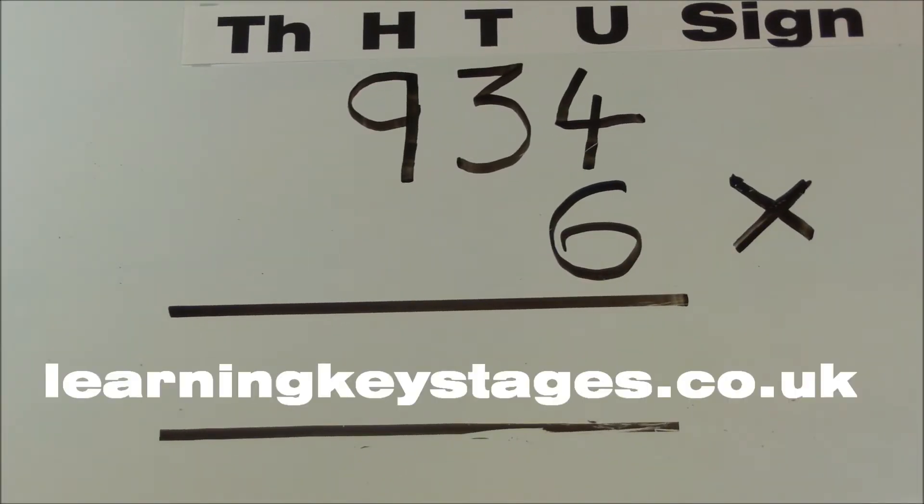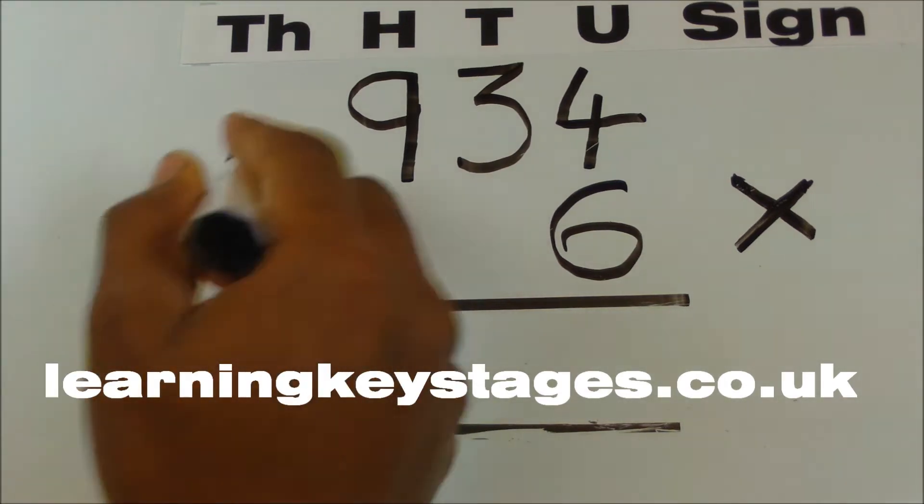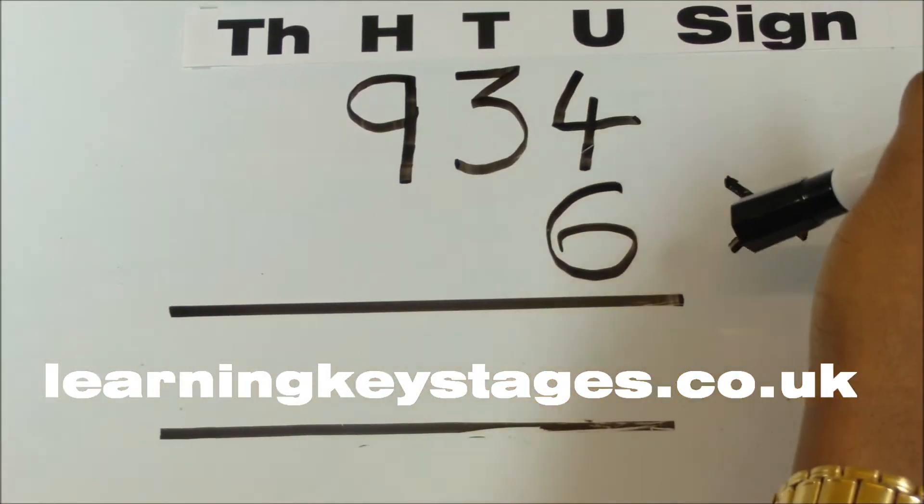This is an example of short multiplication. We're going to multiply 934 multiplied by 6.